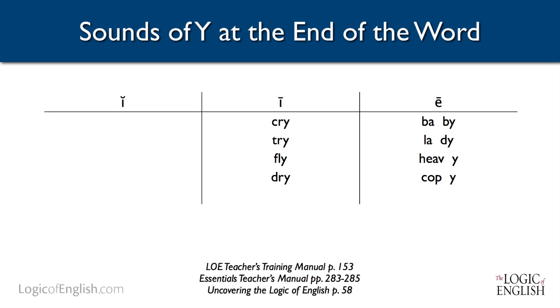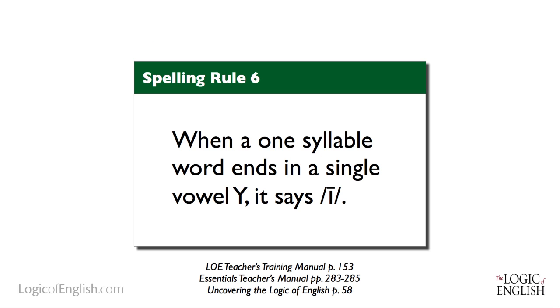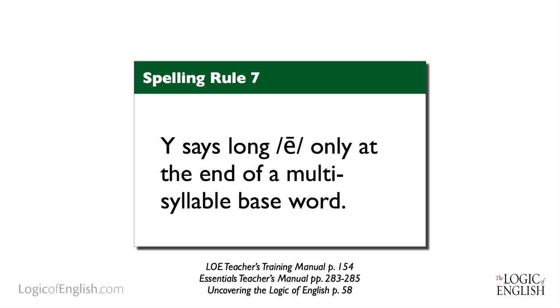And fly? That's a long I word. And dry? Once again, long I. What do you notice about these words? All of the words where Y says the long I sound are one-syllable words, and all of the words where Y is saying the long E sound are multi-syllable words. The rule: when a one-syllable word ends in a single vowel Y, it says I. Y says its long E sound only at the end of a multi-syllable base word. There are a few words where a multi-syllable word has Y saying the long I sound, such as apply, but there are thousands of words where Y says the long E sound at the end of a multi-syllable word.